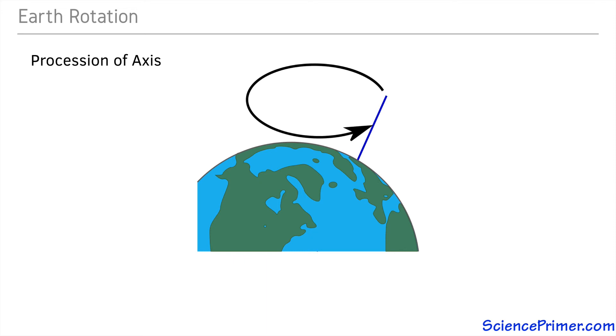Unlike the obliquity, this does not change the angle of the tilt, just its orientation. This is called the precession of the axis and causes the timing of perihelion and aphelion dates to change. It is a 23,000-year cycle.